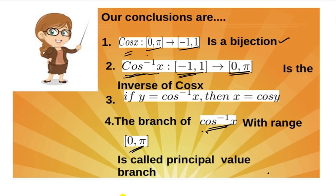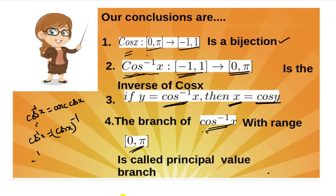An important point: cos inverse x, sin inverse x, or tan inverse x represent an angle — cos inverse x is an angle whose cosine is x. Also, cos inverse x can be written as arc cos x. However, you cannot write cos inverse x as (cos x)^(−1), which would mean 1/cos x = sec x. These are completely different.